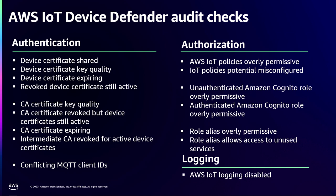Some of the audit checks are related to authentication — when a device authenticates to AWS IoT, how is it authenticating? Does every device have a unique certificate, or are devices sharing certificates, which is not a best practice? You can audit the authentication and authorization mechanisms, including whether you have set up overly permissive IoT policies. With the audit check, you can pick up these overly permissive policies and take action. Another audit check is whether you have turned on logging in AWS IoT.